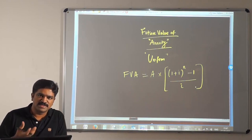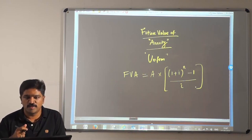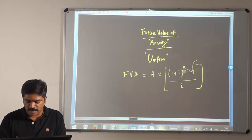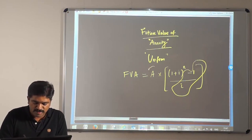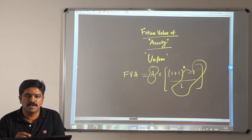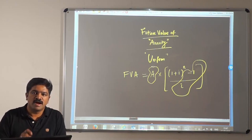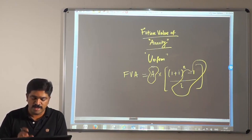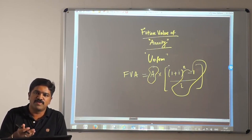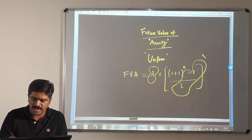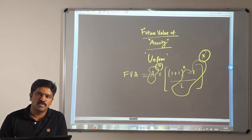This formula is basically an extension of the future value of single cash flow formula. The alterations have happened in the bracket portion. In the single cash flow formula we had principal (P), but here we are using annuity (A), and the second bracketed term is also modified.